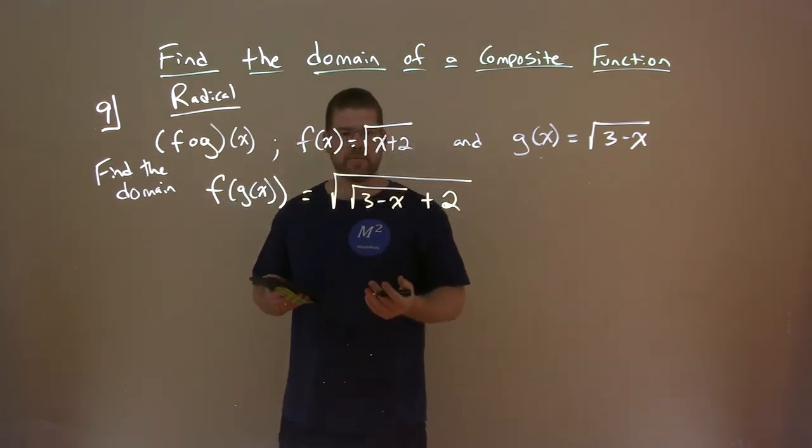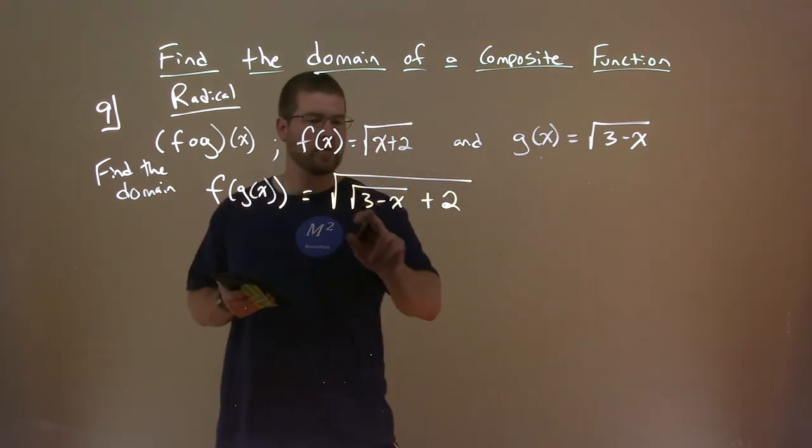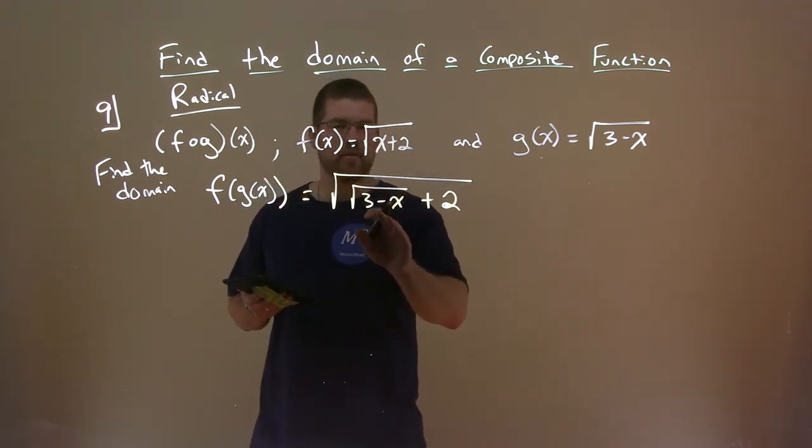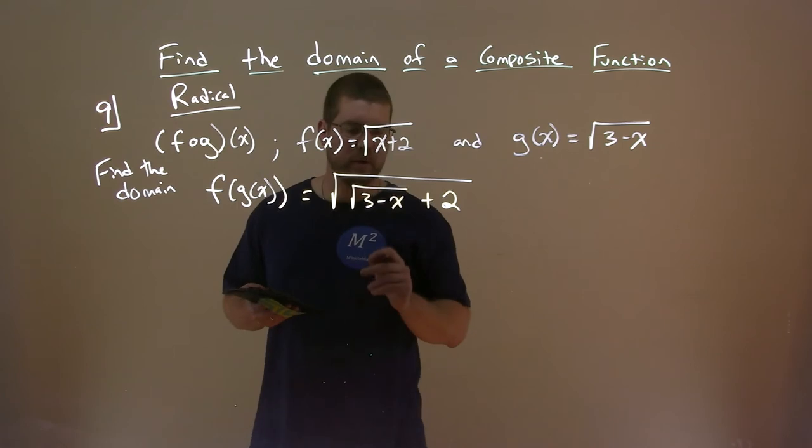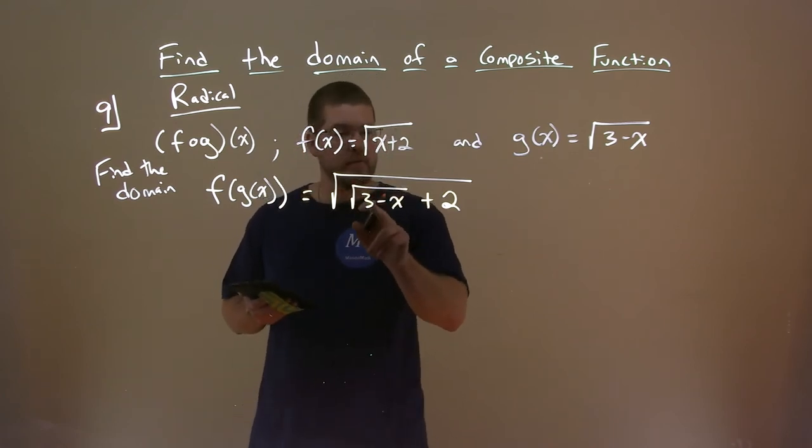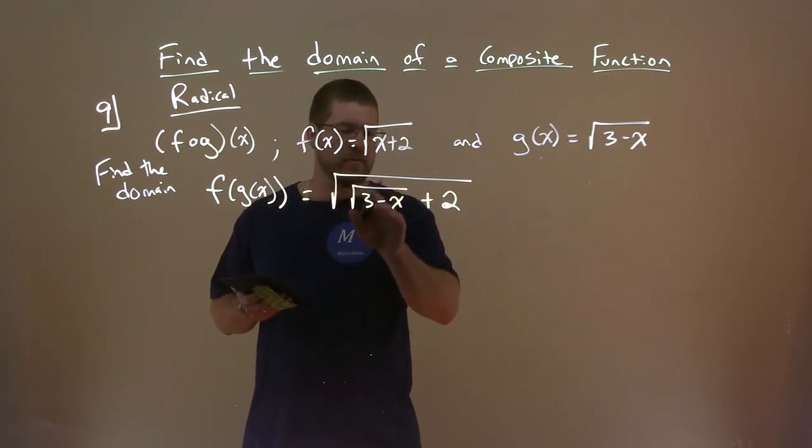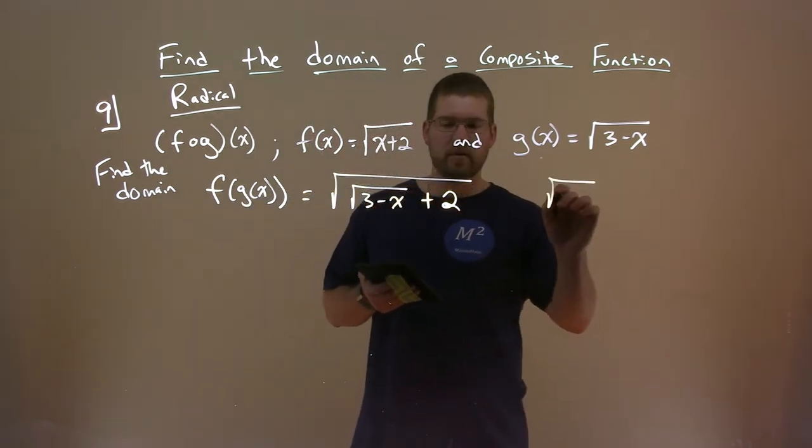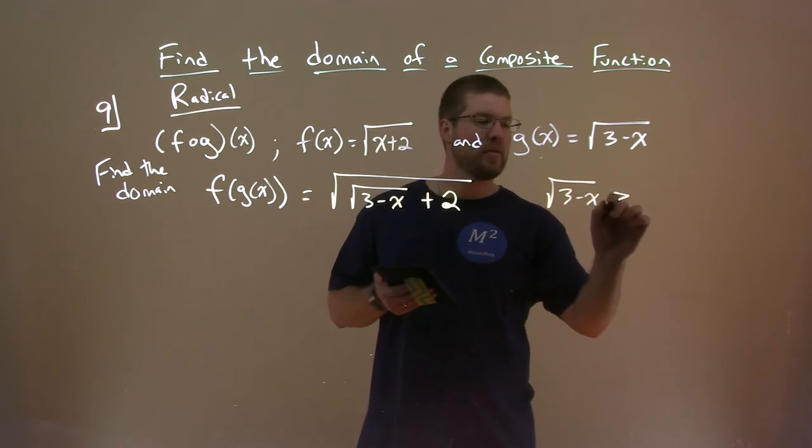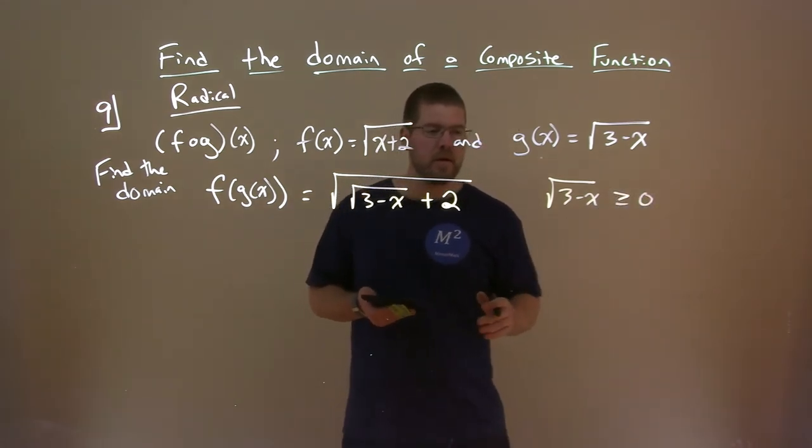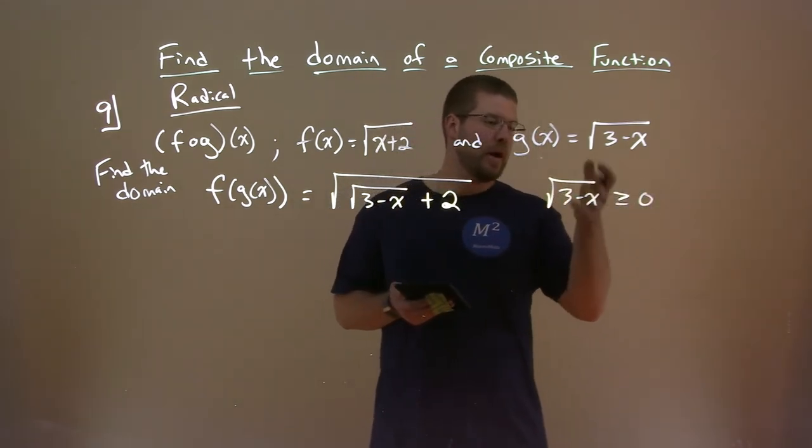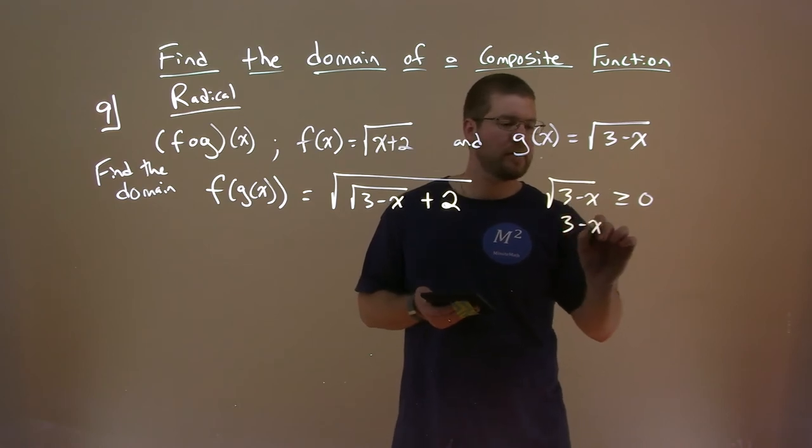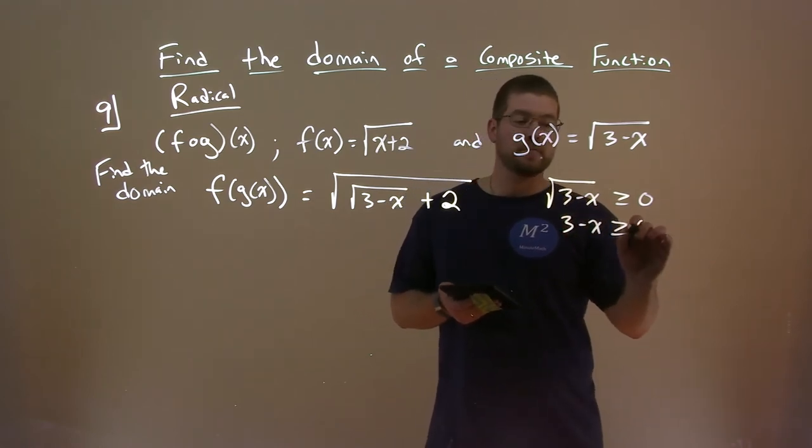Alright. So what do we notice? Well, we know this first square root has to be positive, or it can't be negative, better way to put it. So it can be 0 or positive inside this first part here. So what's the domain of that first part? Well, we know the square root of 3 minus x has to be greater than or equal to 0. Well, square root of both sides really doesn't matter. 3 minus x is greater than or equal to 0 here.